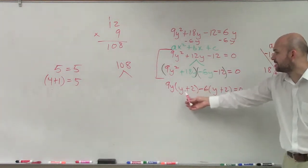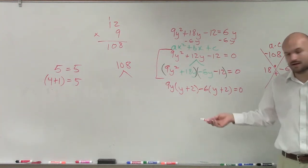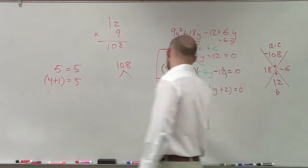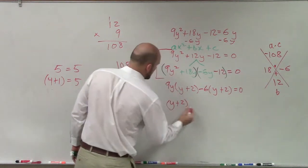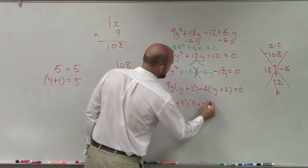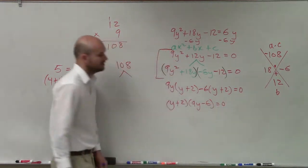Then now you see my y + 2 and my y + 2. I can factor that out. And when I factor that out, I'm left with (9y - 6) = 0. Now I can apply the zero product property.